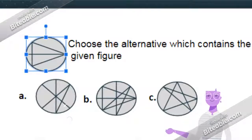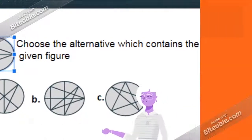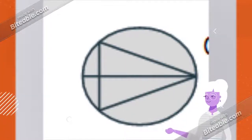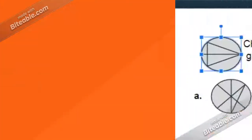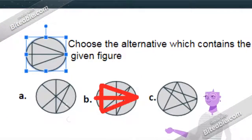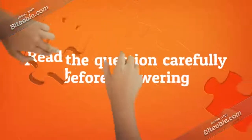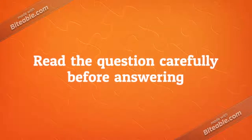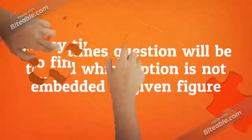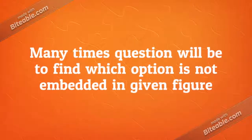You have a question figure followed by answer figures. You have to see in which of the answer figures the question figure is embedded — that is, in which of the options is this question figure present. It is present in option B, so that is your answer. Sometimes the question will ask you to find in which option the question figure is NOT present.